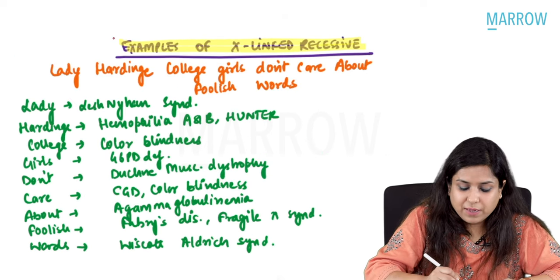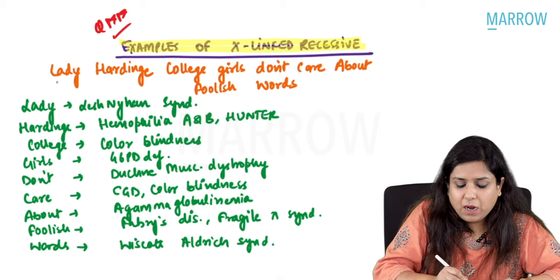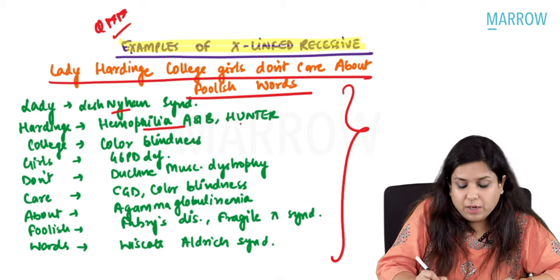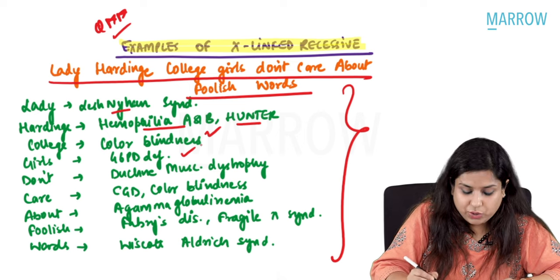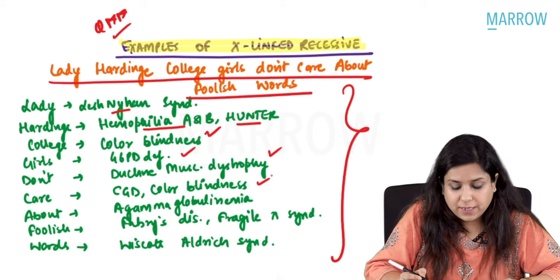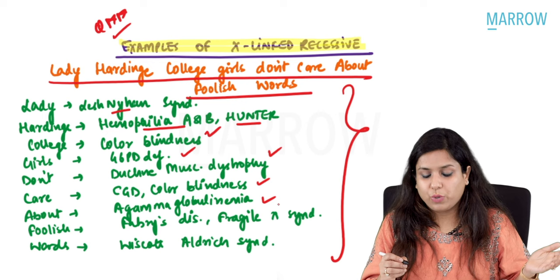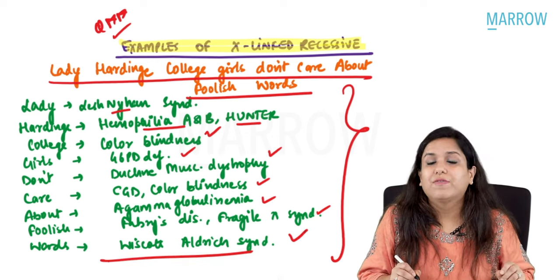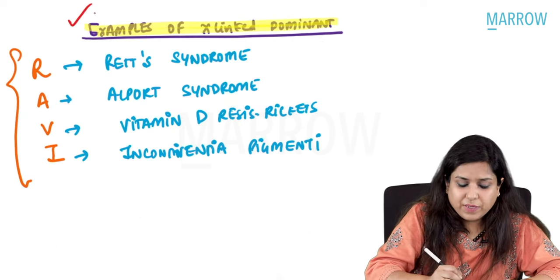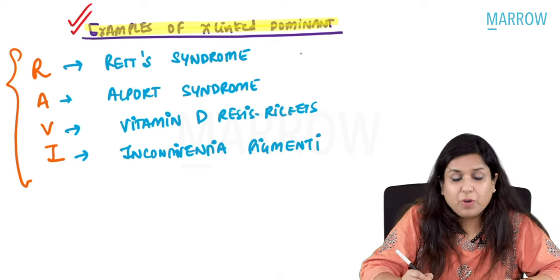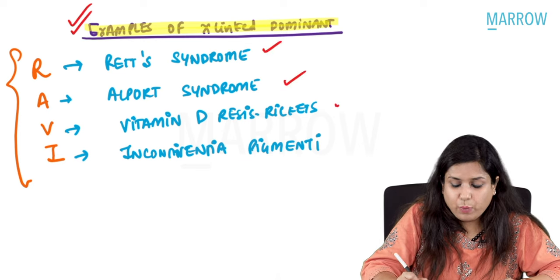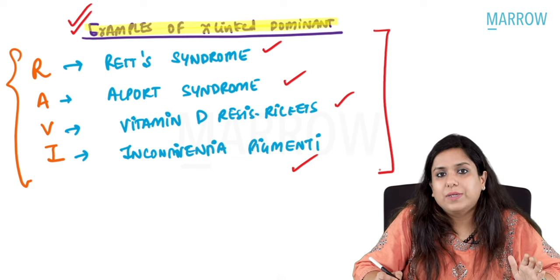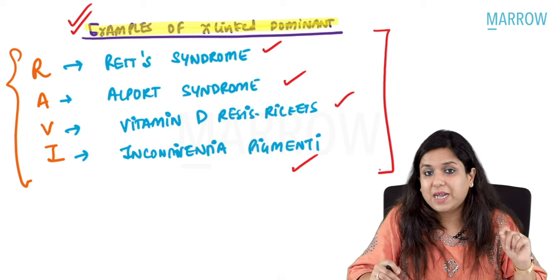Autosomal recessive examples mnemonic A-B-C-D-E-F-G-H-I: A for ataxia, alpha-1 antitrypsin deficiency, alkaptonuria; B for beta-thalassemia; C for congenital adrenal hyperplasia, cystic fibrosis; D for deafness; F for Friedreich's ataxia; G for Gaucher's disease, glycogen storage disorders; H for hemochromatosis, homocystinuria; I for inborn errors of metabolism. X-linked recessive mnemonic: Lesch-Nyhan, Haemophilia A and B, Hunter syndrome, colorblindness, G6PD deficiency, Duchenne muscular dystrophy, chronic granulomatous disease, agammaglobulinemia, Fabry's disease, Fragile X, Wiskott-Aldrich syndrome. X-linked dominant examples: Rett syndrome, Alport syndrome, vitamin D-resistant rickets, incontinentia pigmenti.